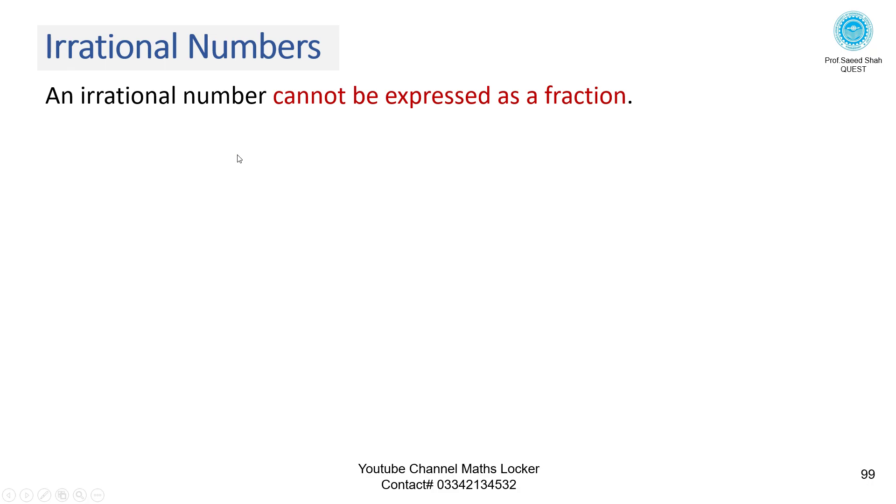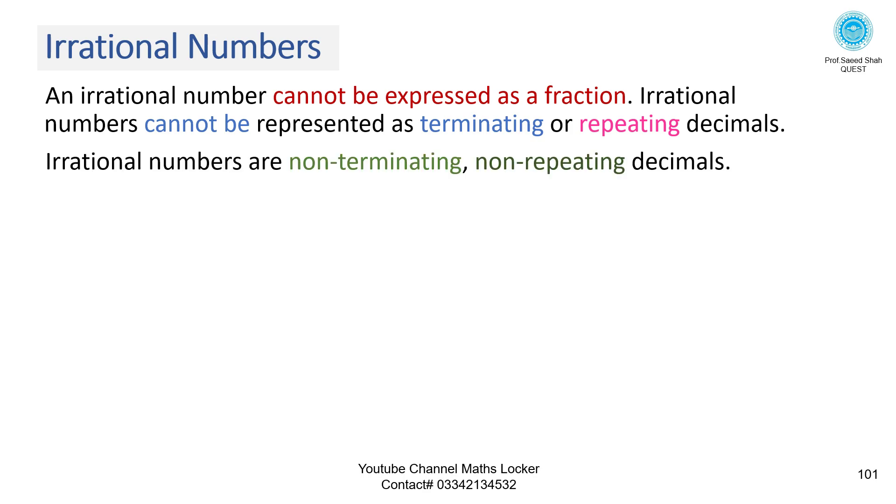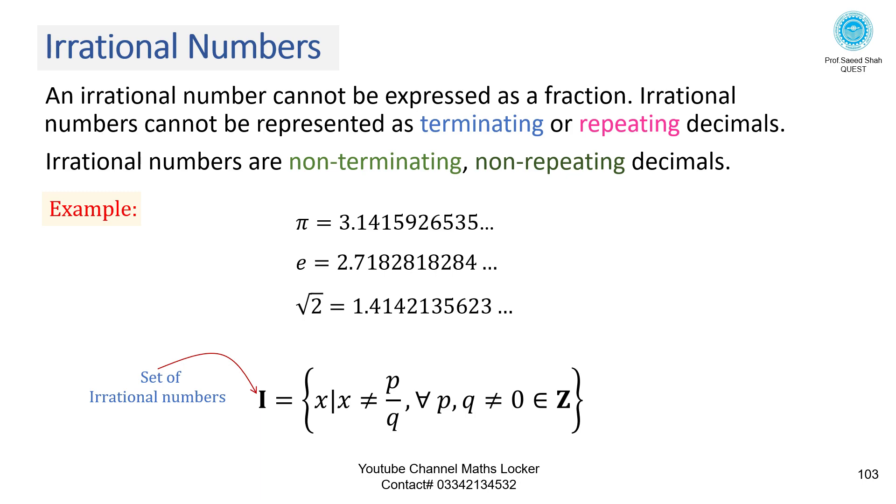Irrational numbers. An irrational number cannot be expressed as a fraction. Irrational numbers cannot be represented as terminating or repeating decimals. Irrational numbers are non-terminating, non-repeating decimals. Example: pi, the value is 3.1415926535. This is non-terminating and non-repeating. E is 2.718281828. Radical 2 is 1.4142135623. These are irrational numbers. Set of irrational numbers.